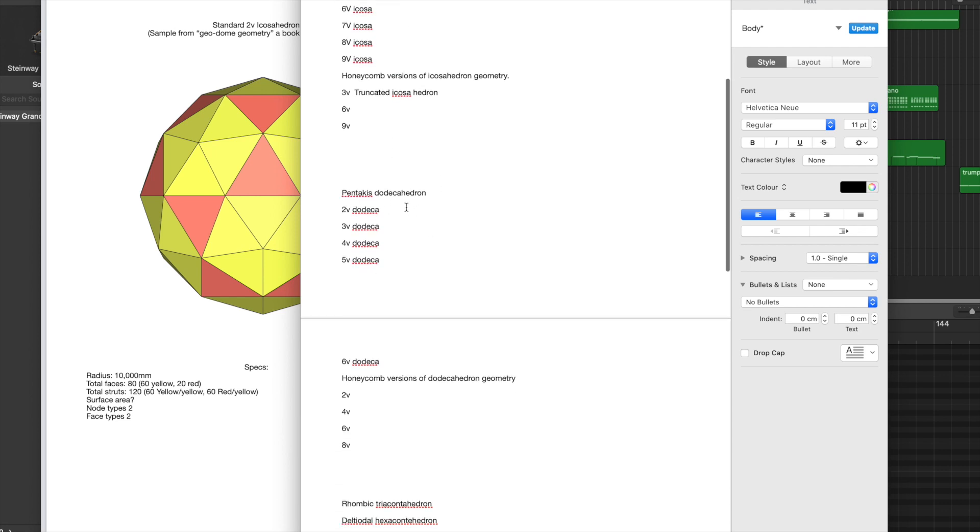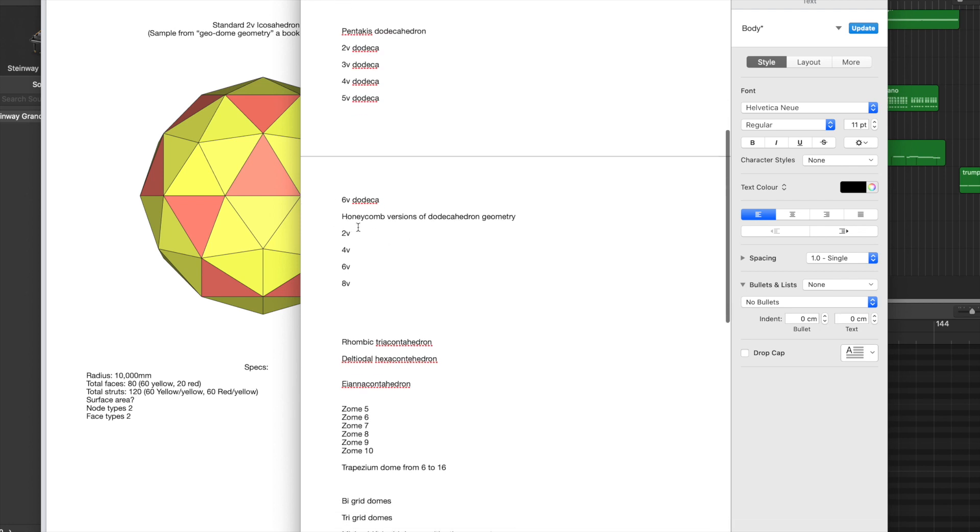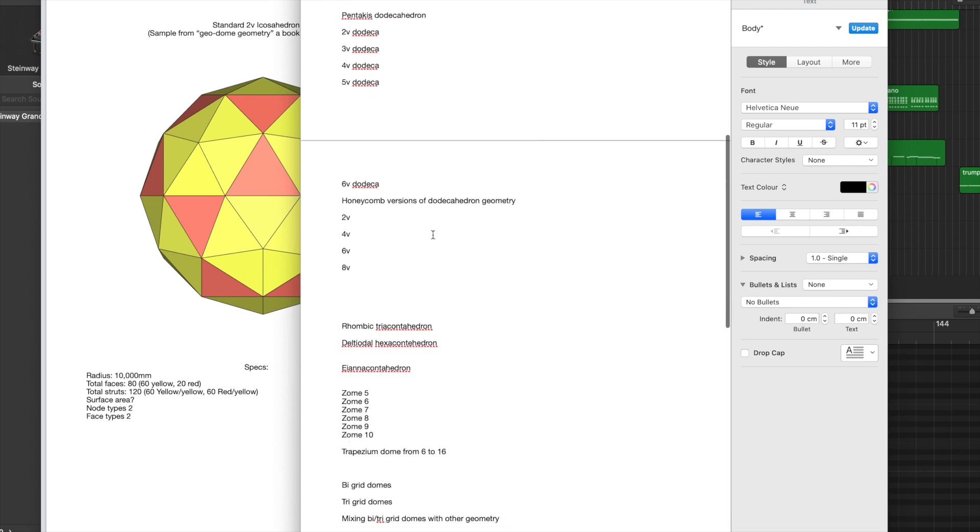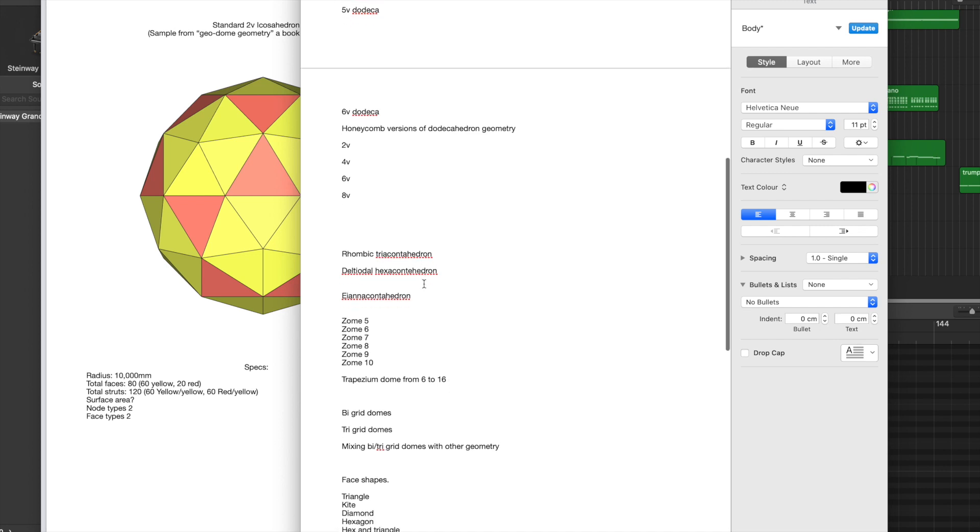Next we would have a dodecahedron breakdown, so that would be the same sort of deal in two, three, four, and five frequency. Six frequency it says here, but we'll see if we'll get to that. Honeycomb versions of everything.